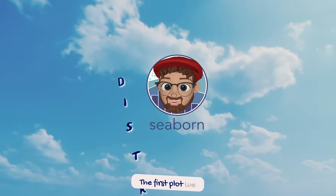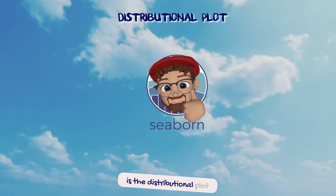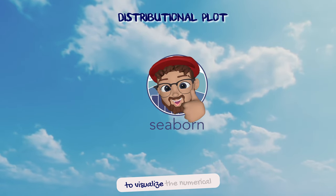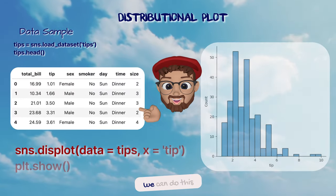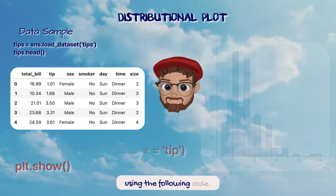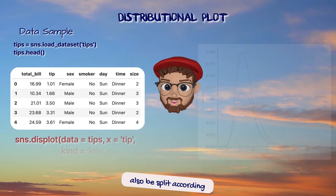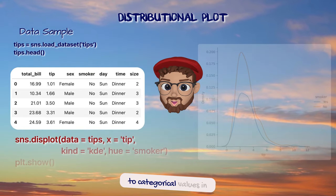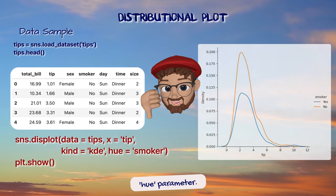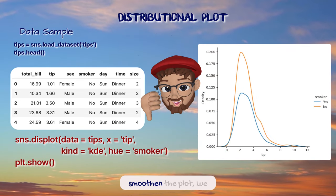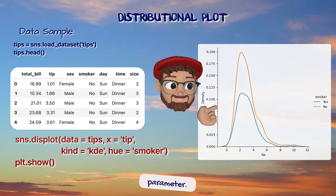The first plot we would try with Seaborn is the distributional plot to visualize the numerical feature distribution. The distributional plot can also be split according to categorical values in the data frame using the hue parameter. If we want to smoothen the plot, we can use the KDE parameter.